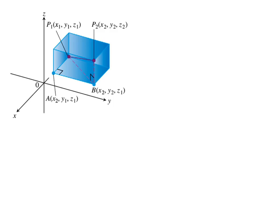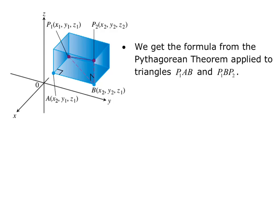In this figure, we have points P1 and P2. Point P1 is the point (X1, Y1, Z1), and point P2 is the point (X2, Y2, Z2). To get the distance formula, we're going to use the Pythagorean Theorem, so we also need to define points A and B. Point A is the point (X2, Y1, Z1), and point B is the point (X2, Y2, Z1). We get the formula from the Pythagorean Theorem applied to triangles P1AB and P1BP2, as I'll show on the next slide.